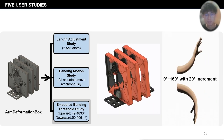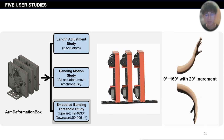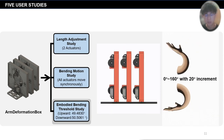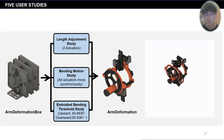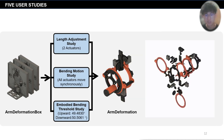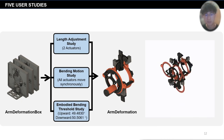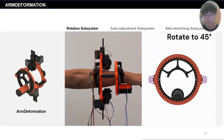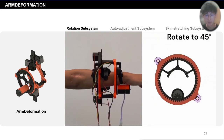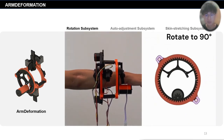In the Embodied Bending Threshold Study, we explored the maximum ratio threshold with body ownership. Based on our perception study, we designed Undeformation, a wearable skin-stretching device to enhance virtual forearm ownership during the undeformation illusion. The wearable device consists of three subsystems: rotation, auto-adjustment, and skin-stretching.